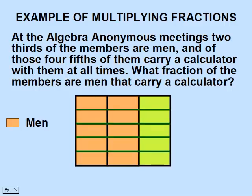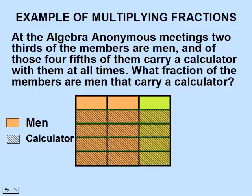Now we'll divide our group into fifths. We will shade in four-fifths which represent all the people that carry a calculator. If we take the group that are men and carry a calculator that would leave us this fraction that is represented in the red outline. We have eight out of a total of fifteen. So eight-fifteenths.